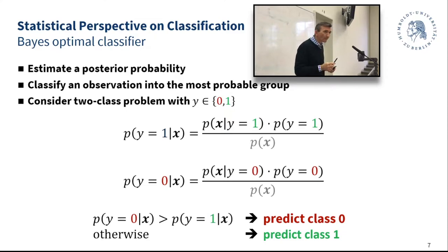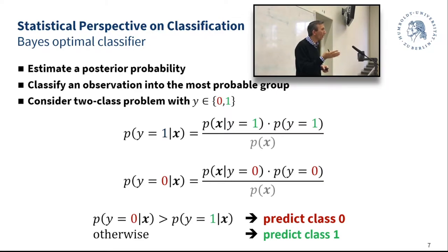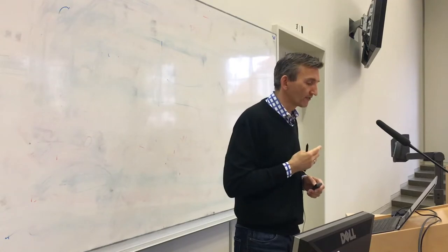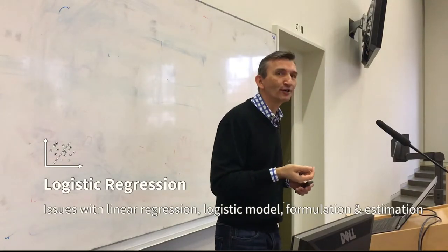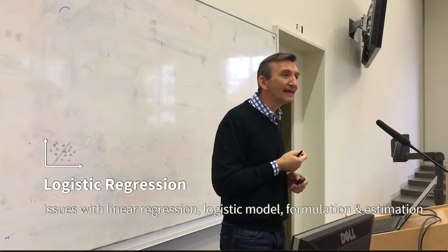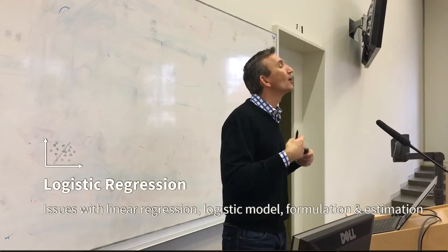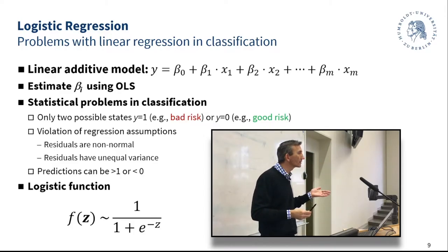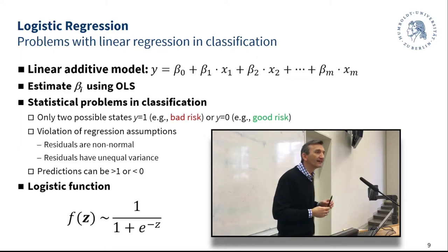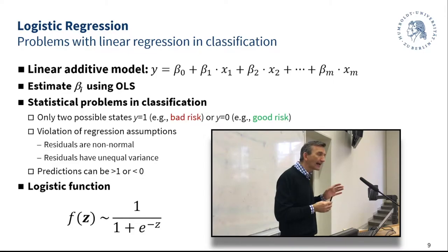This is important because many machine learning papers try to separate two groups with perfection, whereas a statistician would say there is something like a base error and a Bayes optimal classifier — no model can do better. We can think of predictive models as probability estimation machines that, according to Bayes' rule, either pursue option one — directly estimating the posterior — or option two. This leads us to one well-known technique: logistic regression, which you have worked with in the tutorials.